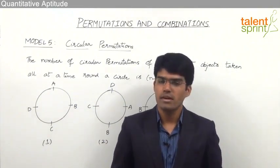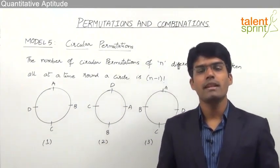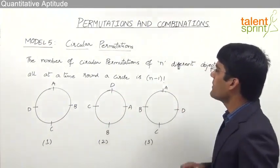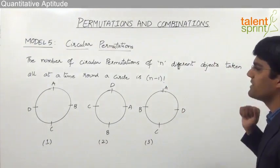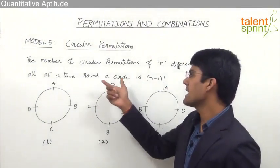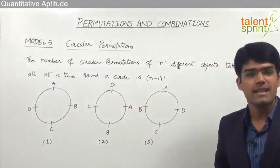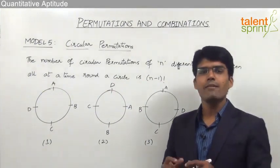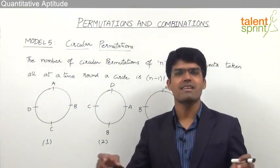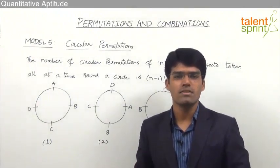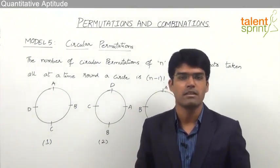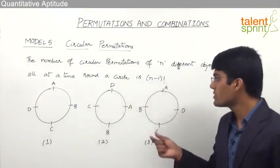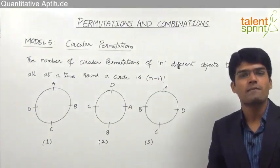Let us understand what is meant by circular permutation and how do we get the number of circular permutations. The number of circular permutations of n different objects taken all at a time around a circle is given as (n-1) factorial. So when there are n objects arranged in a straight line the number of permutations is n factorial, but when arranged around a circle it is (n-1) factorial.